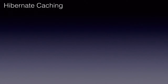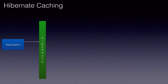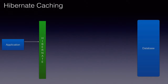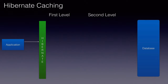Hibernate provides two levels of caching to reduce the number of database interactions within the application. This improves the performance of our applications. The two levels of caches are first level cache and second level cache.